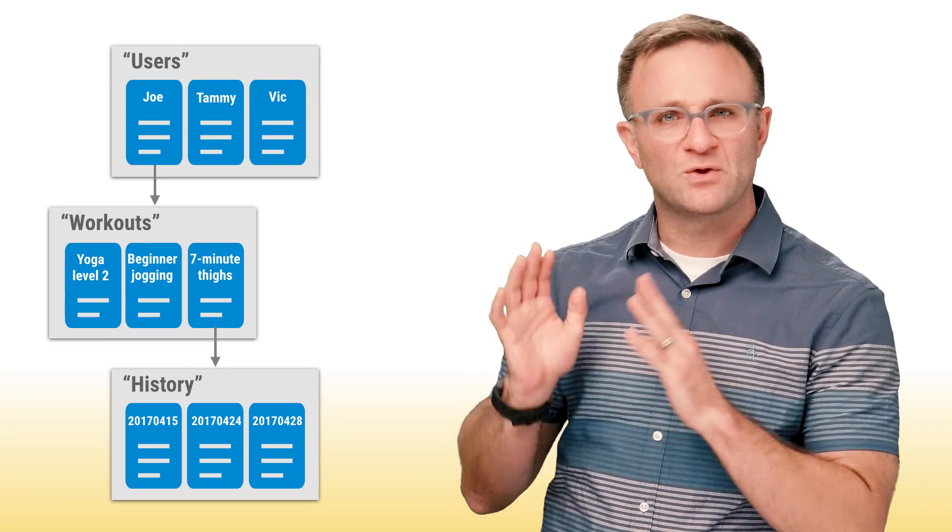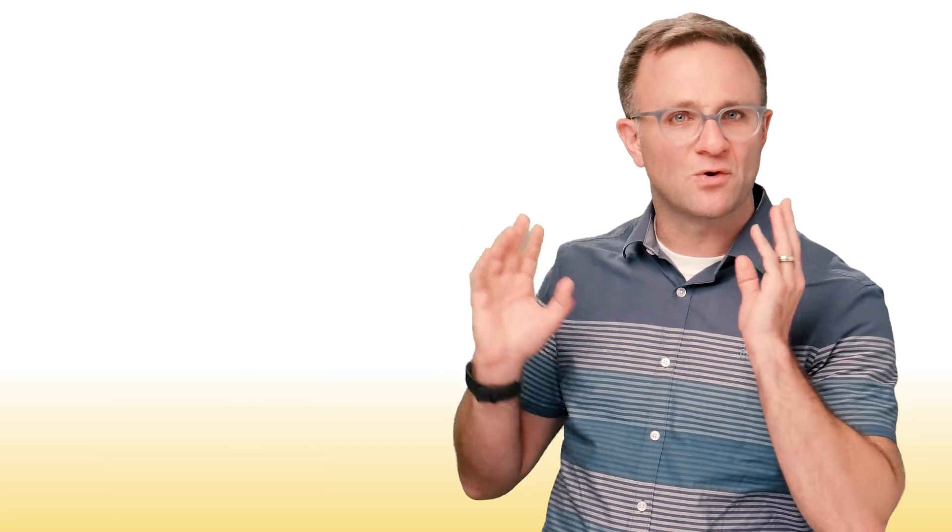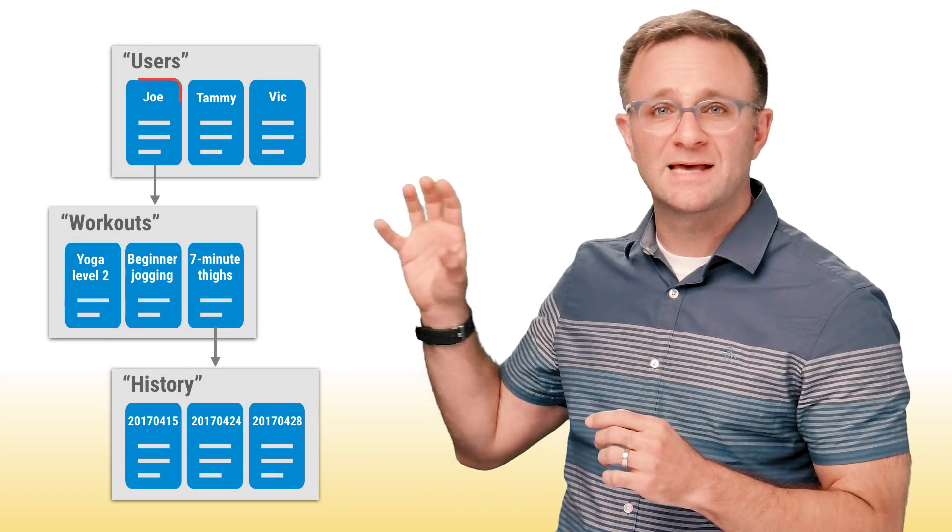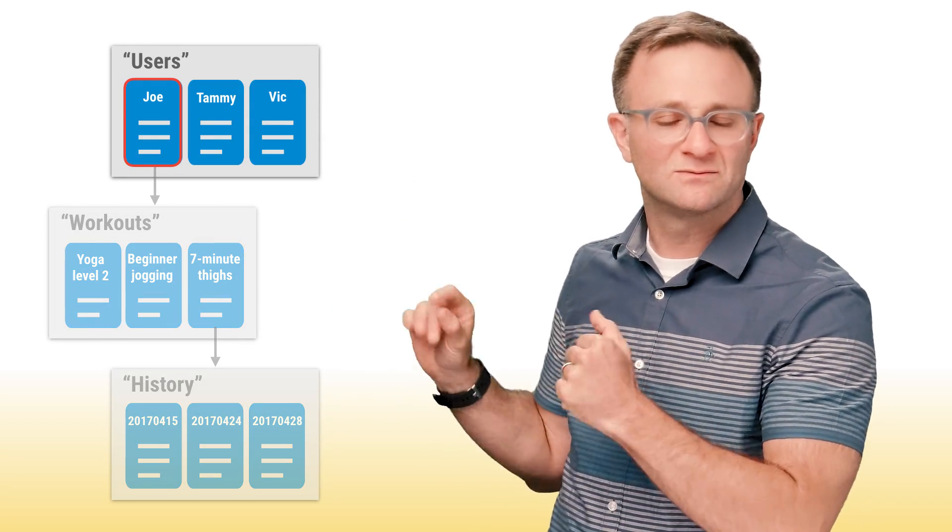Now, if you're coming from the real-time database land, this kind of deep nesting might be giving you heart palpitations. But don't worry. This kind of data structure is completely normal in the Cloud Firestore world, where queries are shallow, meaning that when you grab data from a document, you'll grab just that document and not any of the documents contained in any of these sub-collections, which is nice.